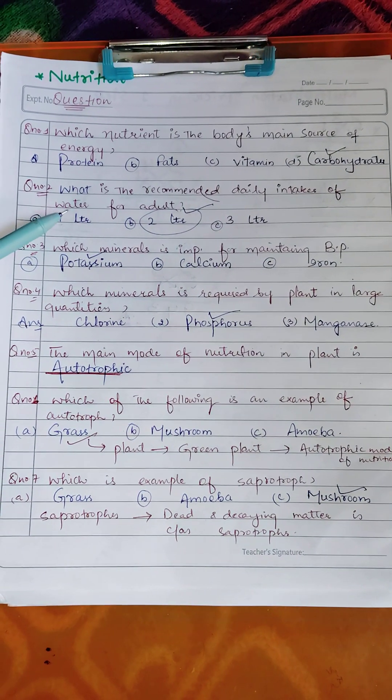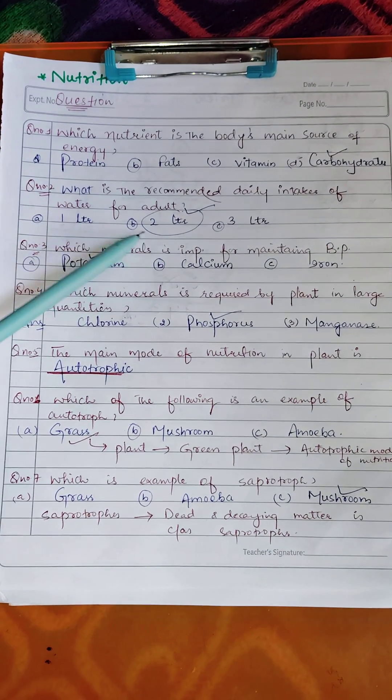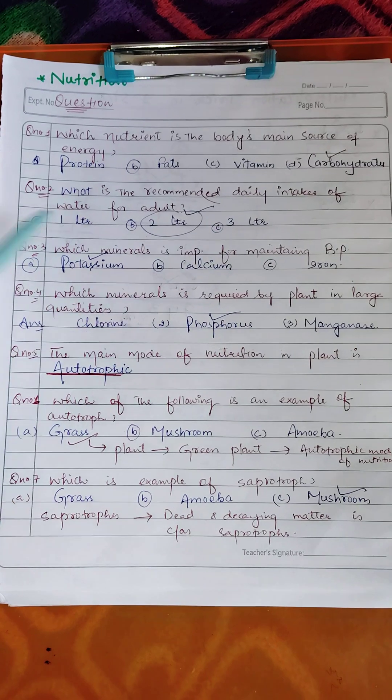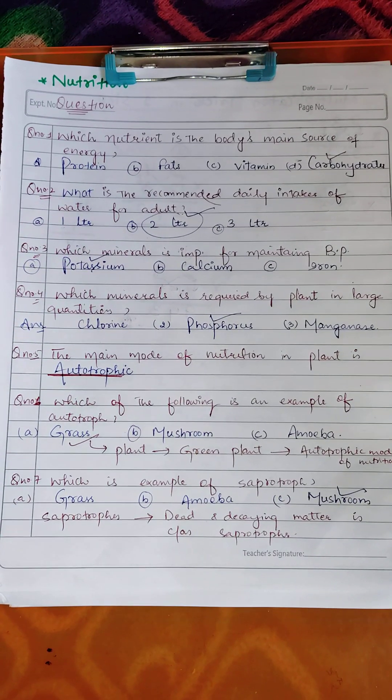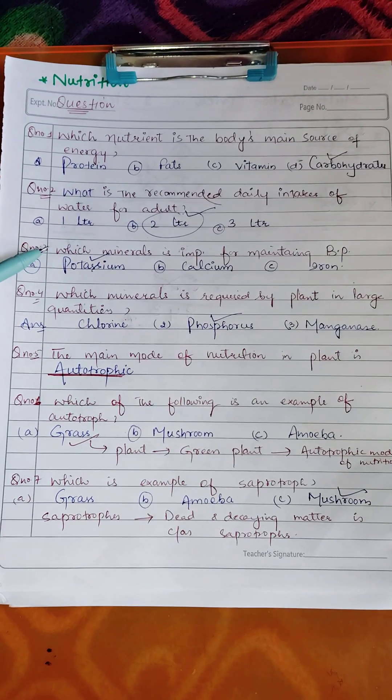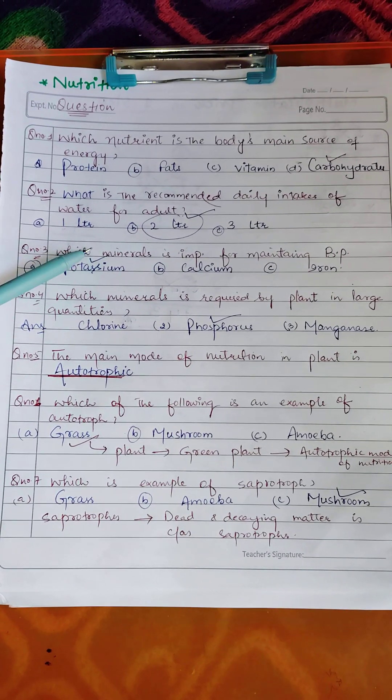Question two: what is the recommended daily intake of water for an adult? Options: one liter, two liters, three liters. The answer is two liters.